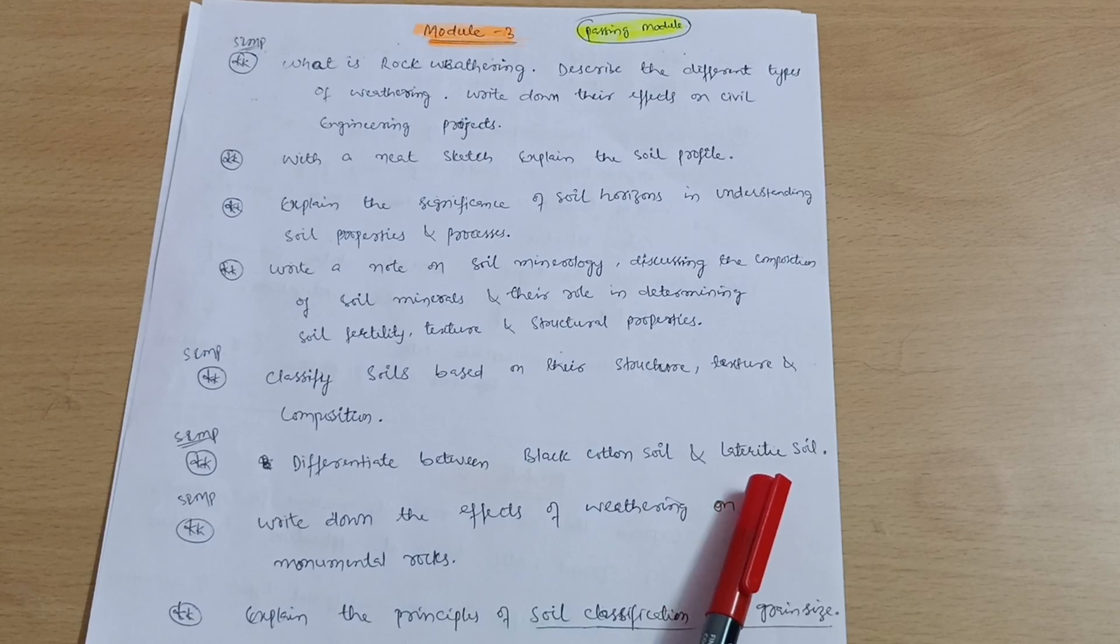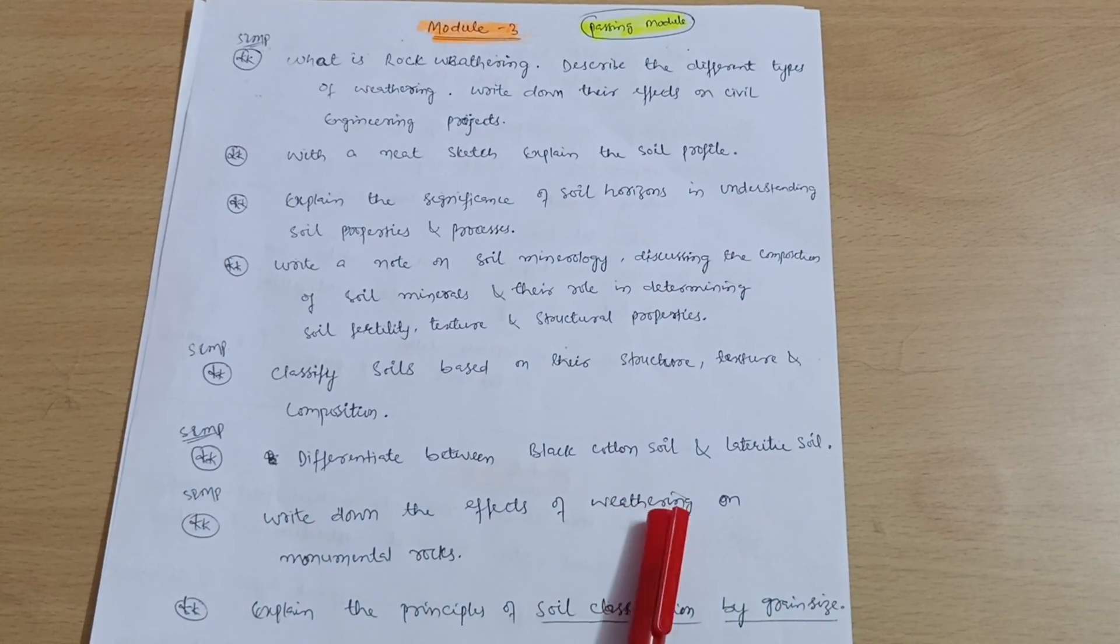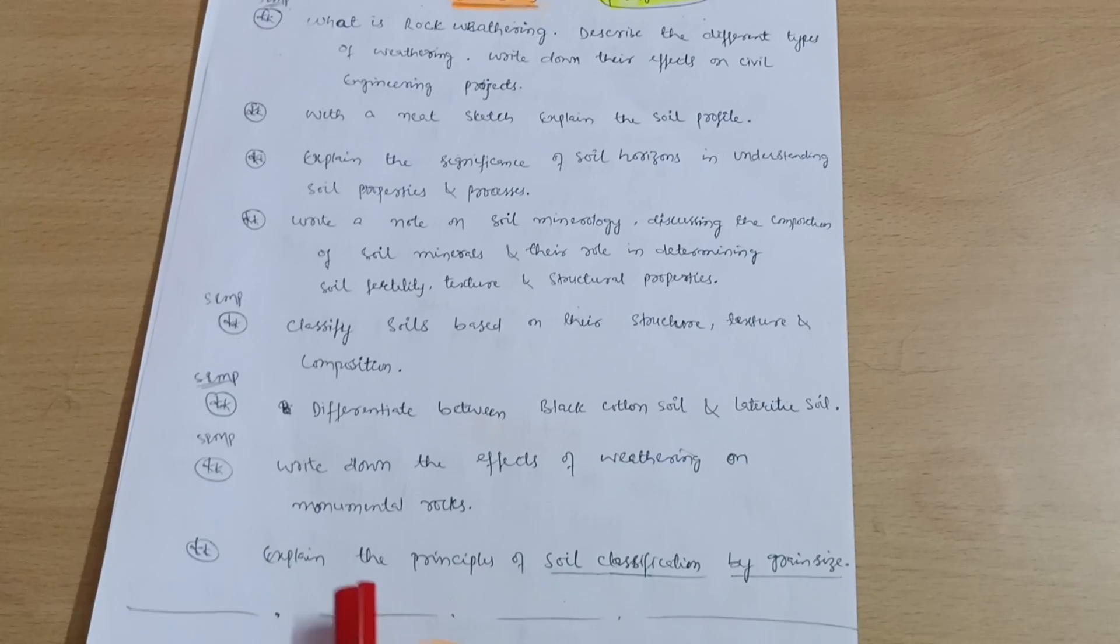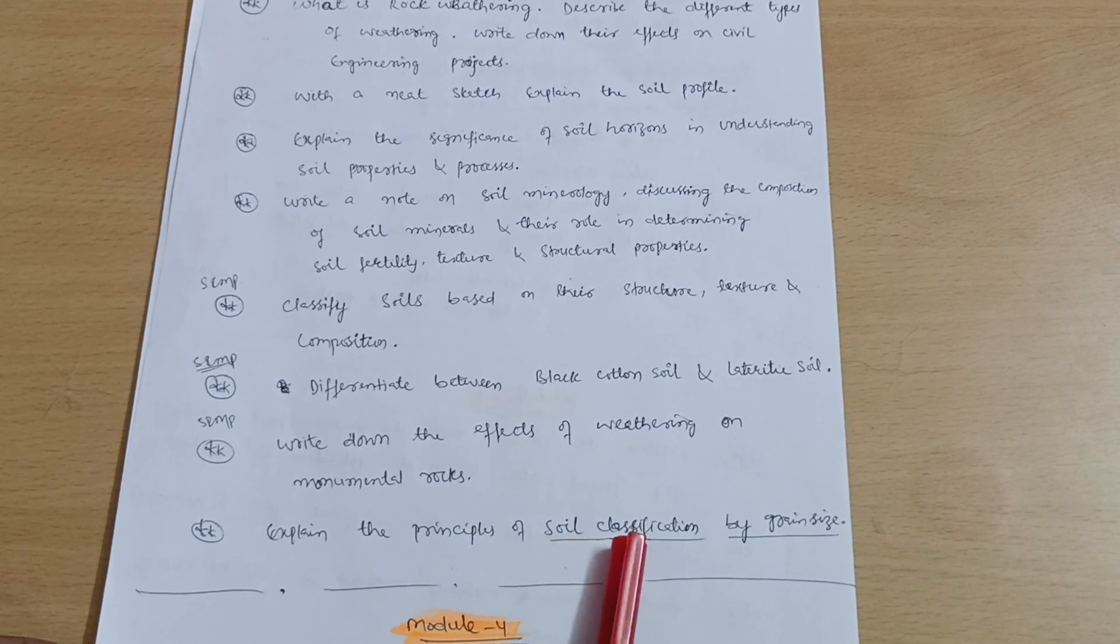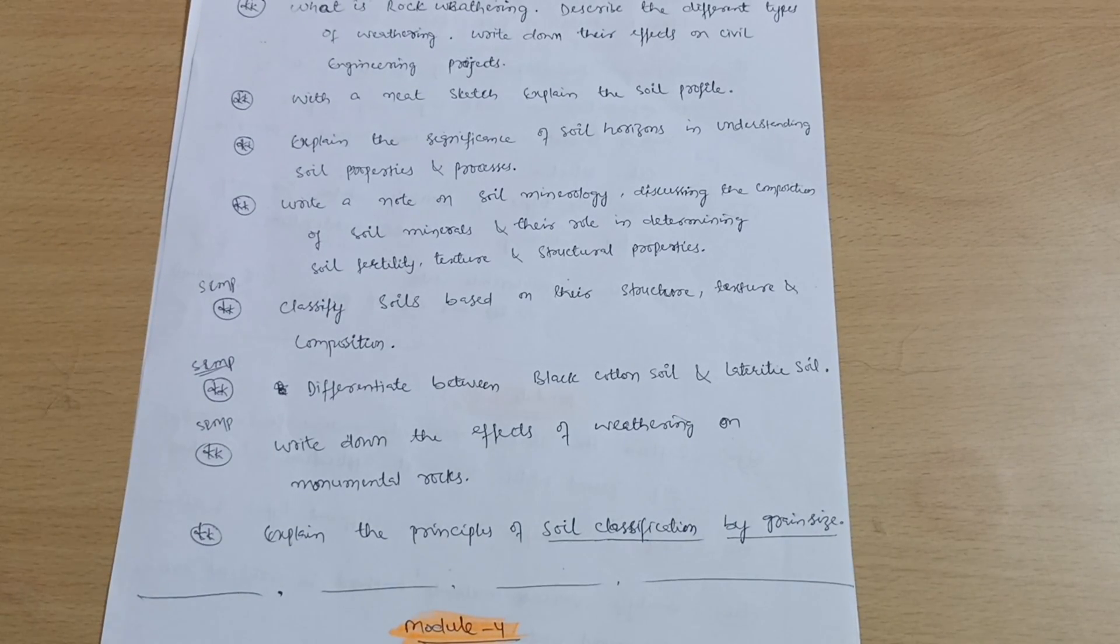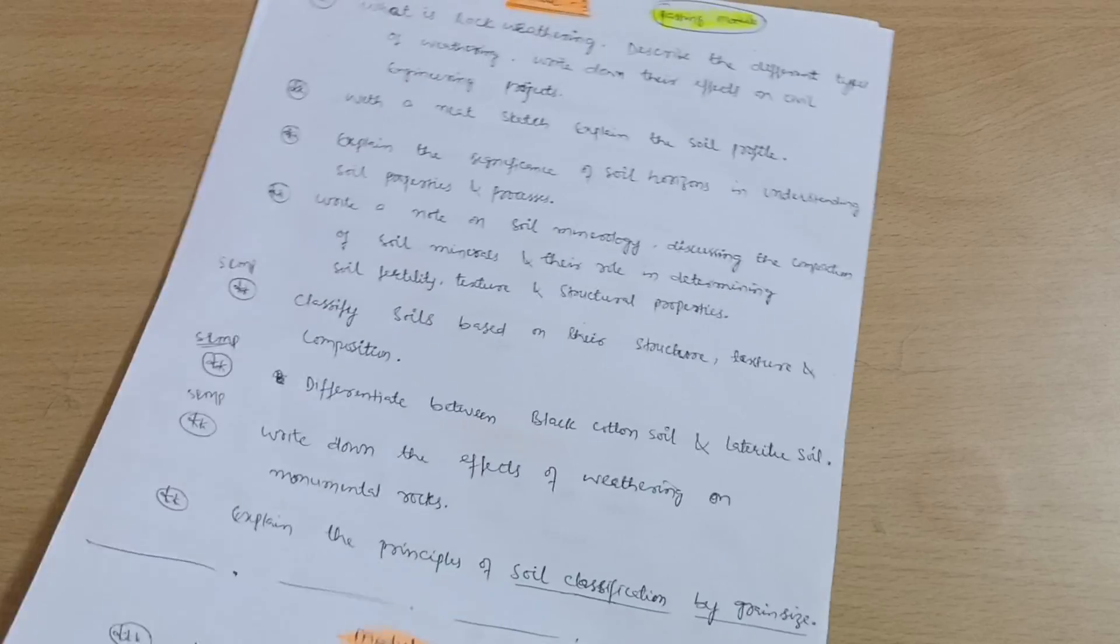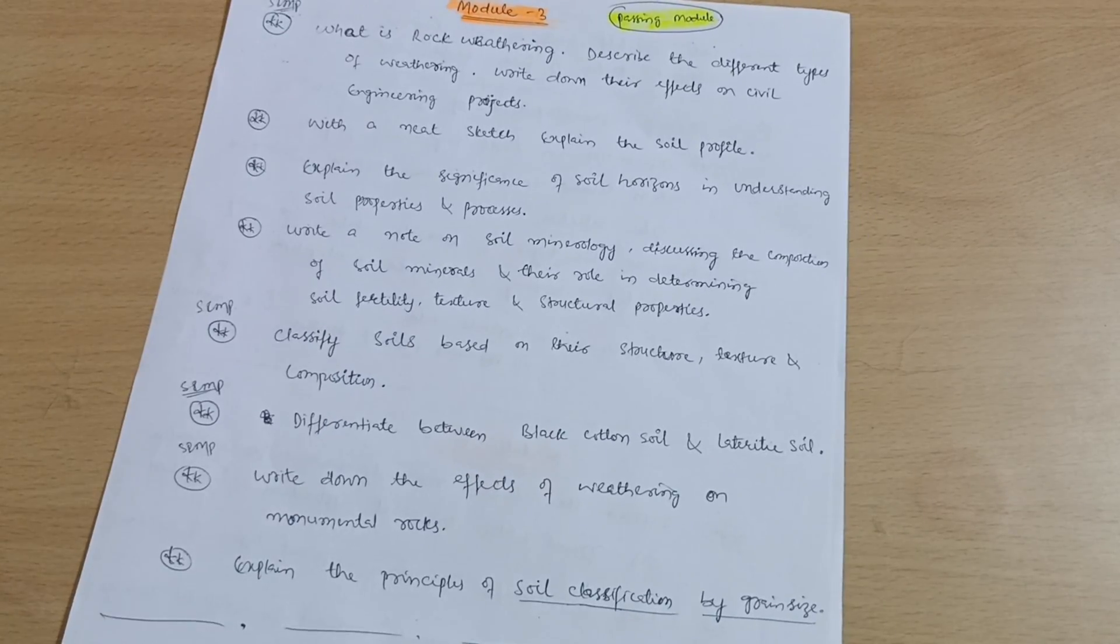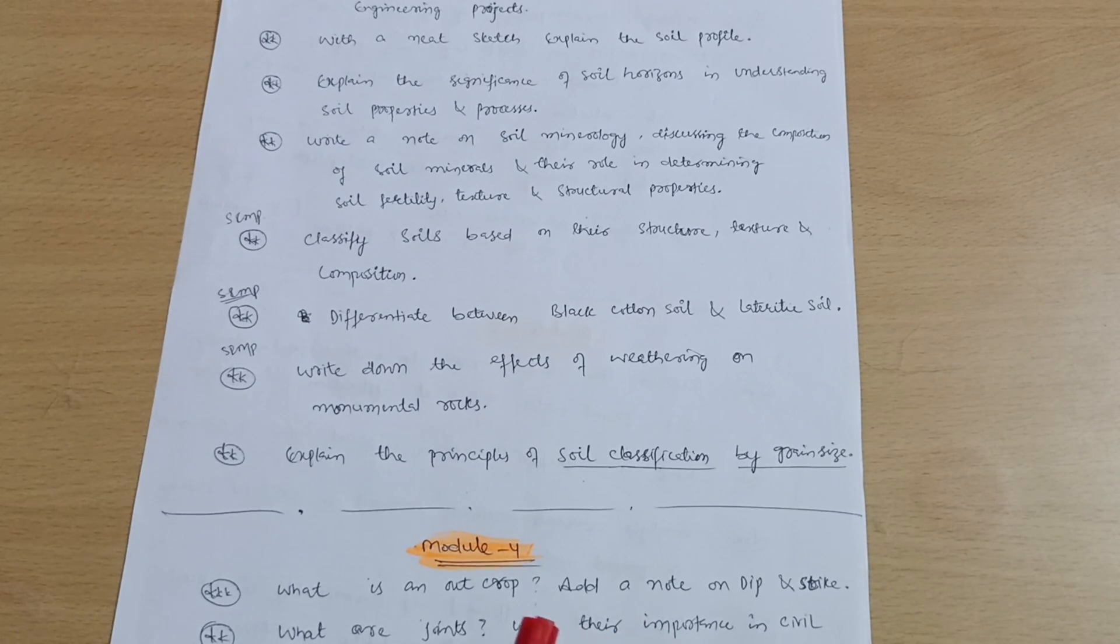Again a super important question: classify soils based on their structure, texture, and composition. Differentiate between black cotton soil and laterite soil. Write down the effects of weathering on the monumental rocks. Next but not least is explain the principles of soil classification by grain size. This is all about Module 3. You should cover this much portion. This should be at your topmost priority. These three modules by which you can pass this subject.